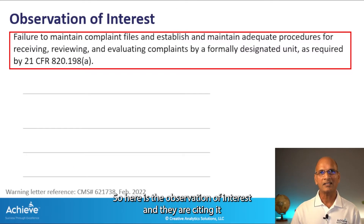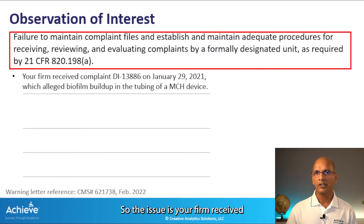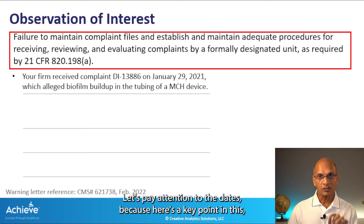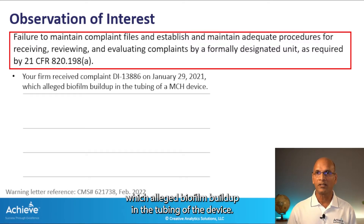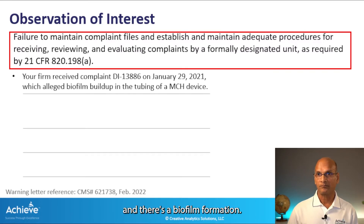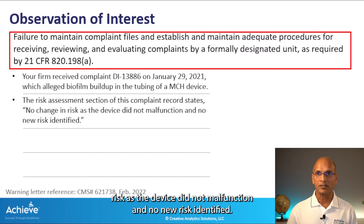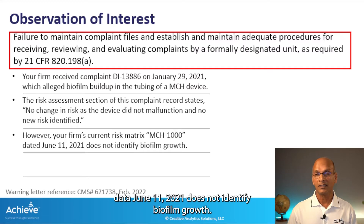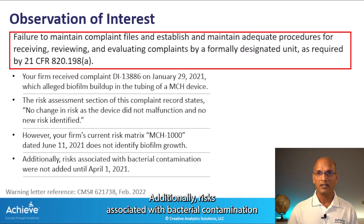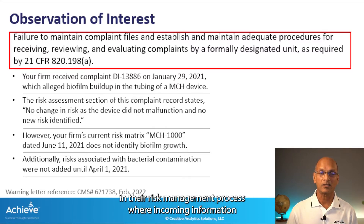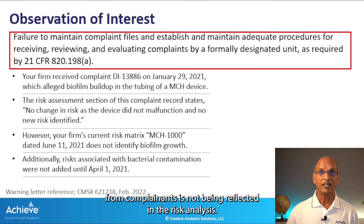Here's the observation of interest, cited against the complaints procedures. The firm received complaint DI 138886 on January 29, 2021, which alleged biofilm buildup in the tubing of an MCH device. This tubing is supposed to have an antimicrobial coating. The risk assessment section of this complaint record states no change in risk, as the device did not malfunction and no new risk was identified. However, the firm's current risk matrix dated June 11, 2021 does not identify biofilm growth. Additionally, risks associated with bacterial contamination were not added until April 1, 2021. FDA is observing a gap where incoming information from complaints is not being reflected in the risk analysis.